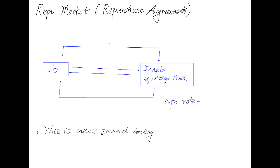Before we begin, let's have a recap on repo markets. The term repo is simply an abbreviation for repurchase agreement. To illustrate, let's look at this diagram. Here the investment bank would enter the repo market with collateral, and the investor — for example, a hedge fund — would buy this collateral and pay the investment bank an amount X dollars.